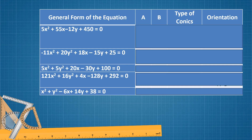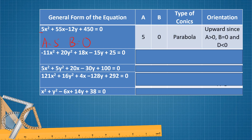Let's identify the values of A, B, type of conics, and orientation for five examples. For the first example, A equals 5 since that is the numerical coefficient of x squared. Since there is no term with y squared, B equals 0. Since B equals 0, the type of conics is a parabola. The orientation is upward because the variable with the square is x, and we have negative 12y. If y is negative, the orientation is upward; if positive, downward.